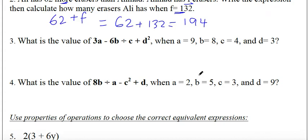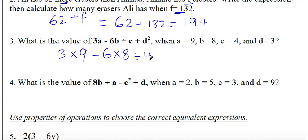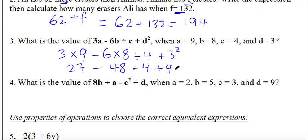Question three: what is the value of 3a minus 6b divided by c plus d squared when a equals 9, b equals 8, c equals 4, and d equals 3? We substitute and follow the order of operations. It becomes 3 times 9 minus 6 times 8 divided by 4 plus 3 squared, which is 27 minus 48 divided by 4 plus 9. We finalize the division first: 27 minus 12 plus 9.